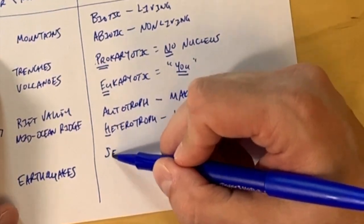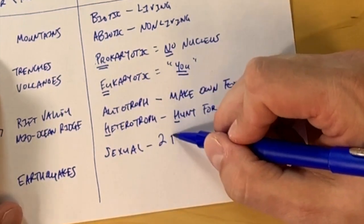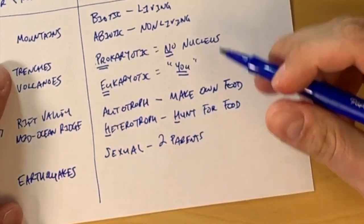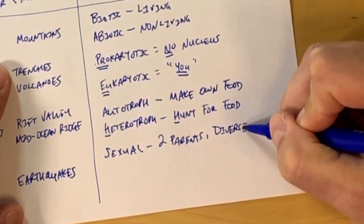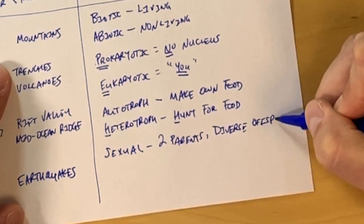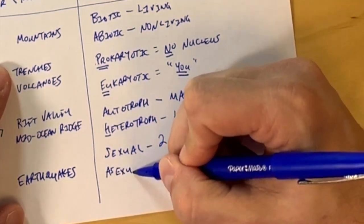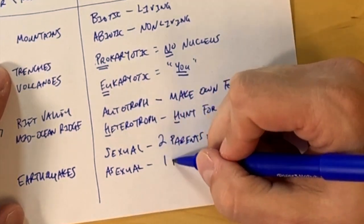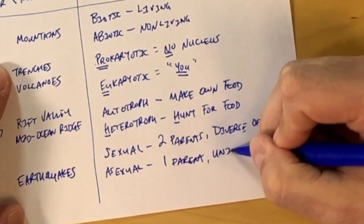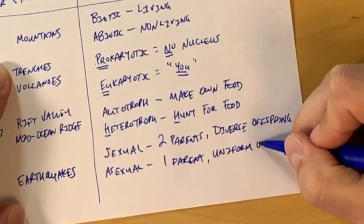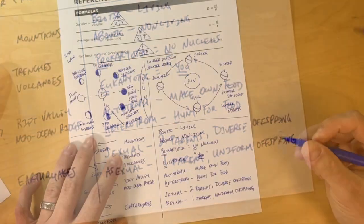And then the last two terms we'll look at are sexual and asexual. Sexual is two parents who have offspring with different DNA, or another way to say this is diverse offspring. They're different. And then asexual reproduction has only one parent, but it has identical offspring or uniform offspring. Same DNA as the parent.